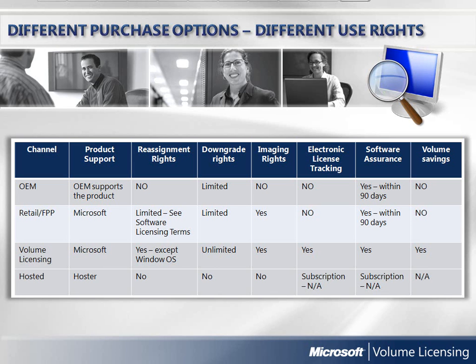Volume licensing is the only channel that offers electronic license tracking via eOpen or NVLS. When you acquire licenses via OEM or retail, you must retain and track the paper licenses that accompany the software. Many OEM and retail licenses can be enrolled in software assurance through volume licensing within 90 days of the software acquisition, providing them with the volume licensing use rights of the program they were purchased through. The OEM or retail versions must be the same version as the software assurance. Volume price discounts are available only through volume licensing, making it a good financial option for companies that need more than five licenses.